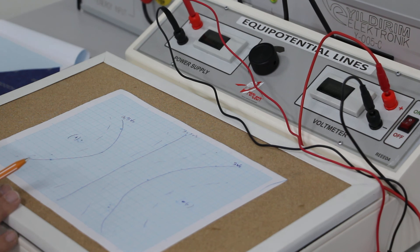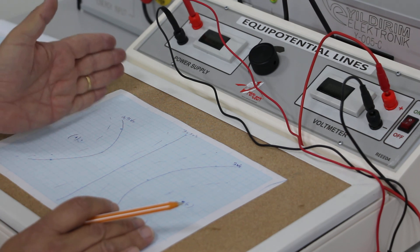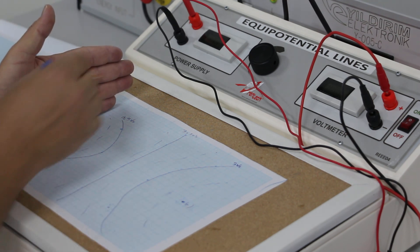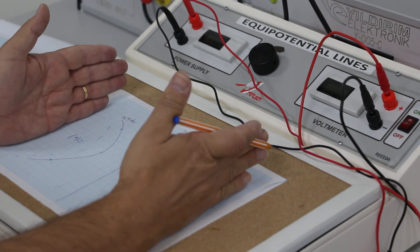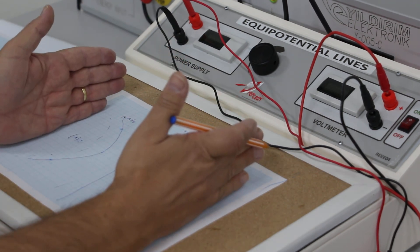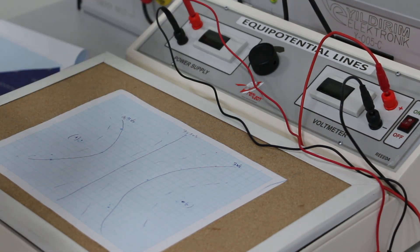We can do the same experiments with some other devices, not two dots, but one parallel road and a dot. Or two roads, or two parallel roads each other. We can get some other shapes of potential lines also.